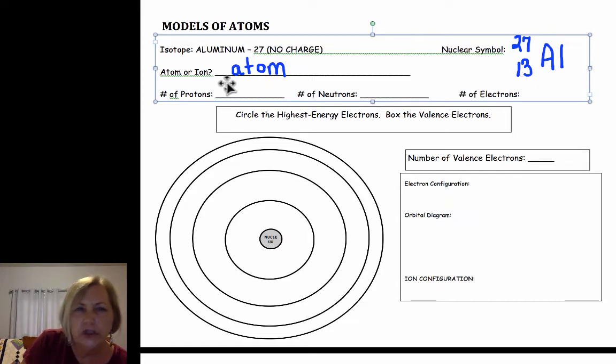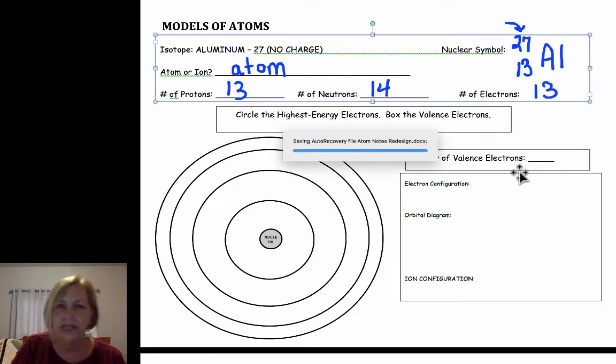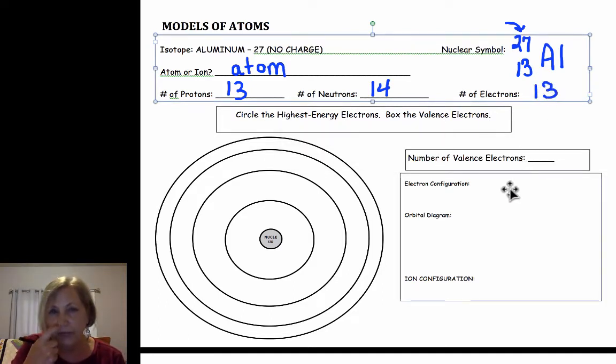Its atomic number is 13 so it has 13 protons. To find neutrons we look to the mass number. Mass number minus protons is our number of neutrons. Since it's a neutral atom, I must have the same number of electrons as I have protons.